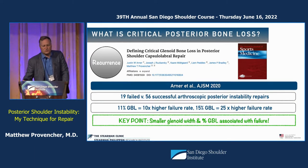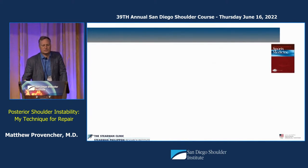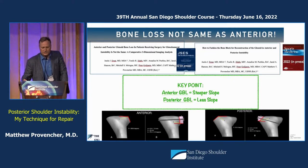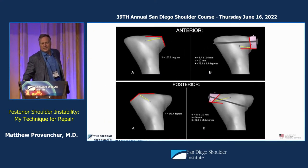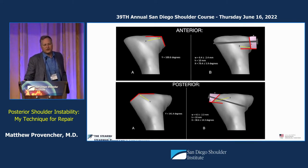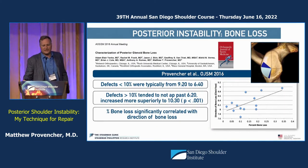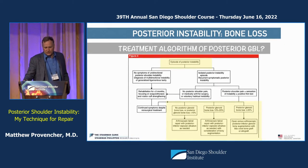Smaller glenoid width and percent glenoid bone loss continue to be associated with failure, especially posteriorly. We have an article currently looking at anterior versus posterior grafts and how to fashion them. The key point is anterior is almost 90 degrees — about 88 degrees on average — while posterior is about 40 degrees. These differences in glenoid neck morphology matter when fashioning your bone graft, and bone loss correlated very well with overall outcome.